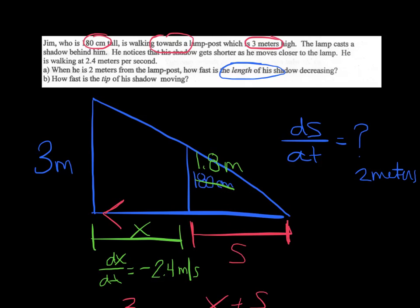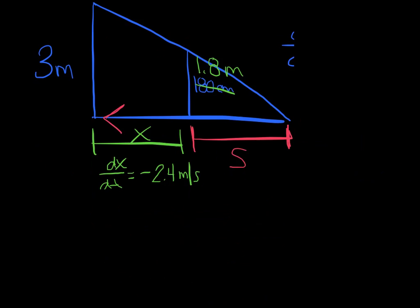So let me redraw my picture. So because they're saying that tip of the shadow, again, I'm talking about this whole segment here. And I want to give that whole segment one variable to make that even easier on myself. So I'm just going to call this whole base Z. So the question is saying, how fast is the tip of the shadow changing? I'm really finding, how fast is dZ/dt changing?